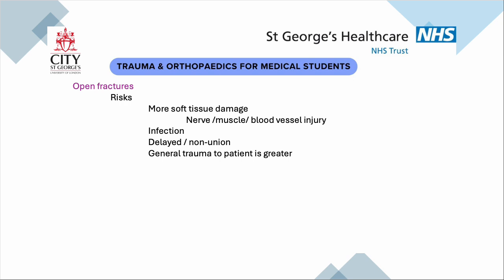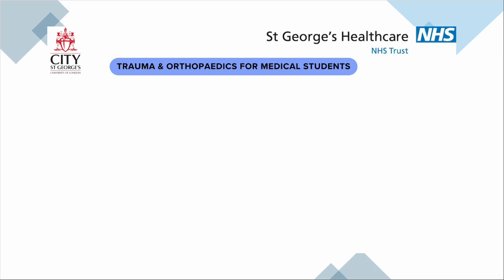People panic when they see big open fractures. What you've got to remember is that your primary goal is to treat the patient: A, B, C, D, E — the ATLS stuff. Look after the airway, the breathing, the circulation, and then move on to the disability and the deformity.